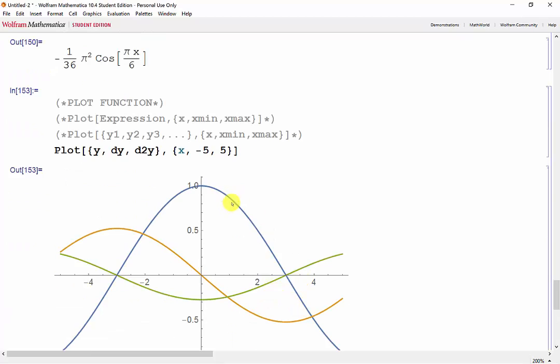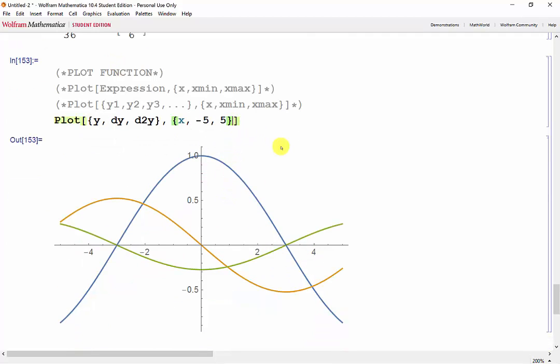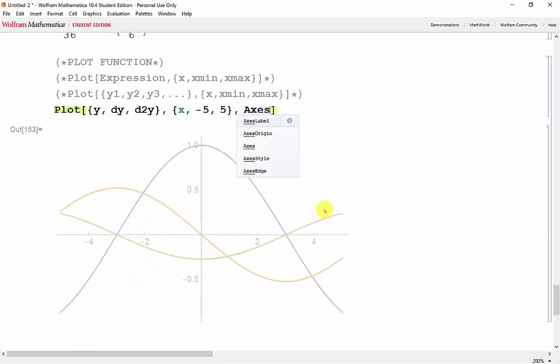And we get this plot. Now, we can label this exactly the same way we labeled our list plot. So we'll go ahead with our axis label and our rules.